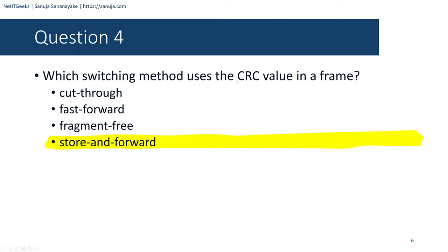Question number eight: What is one advantage of using the cut-through switching method instead of store-and-forward? Options include: has a positive impact on bandwidth by dropping most invalid frames; makes a fast-forwarding decision based on source MAC address; has a lower latency appropriate for high-performance computing applications; or provides flexibility to support any mix of Ethernet speeds. The answer is it has lower latency appropriate for high-performance computing applications, because cut-through switching starts forwarding as soon as it reads the destination MAC address.